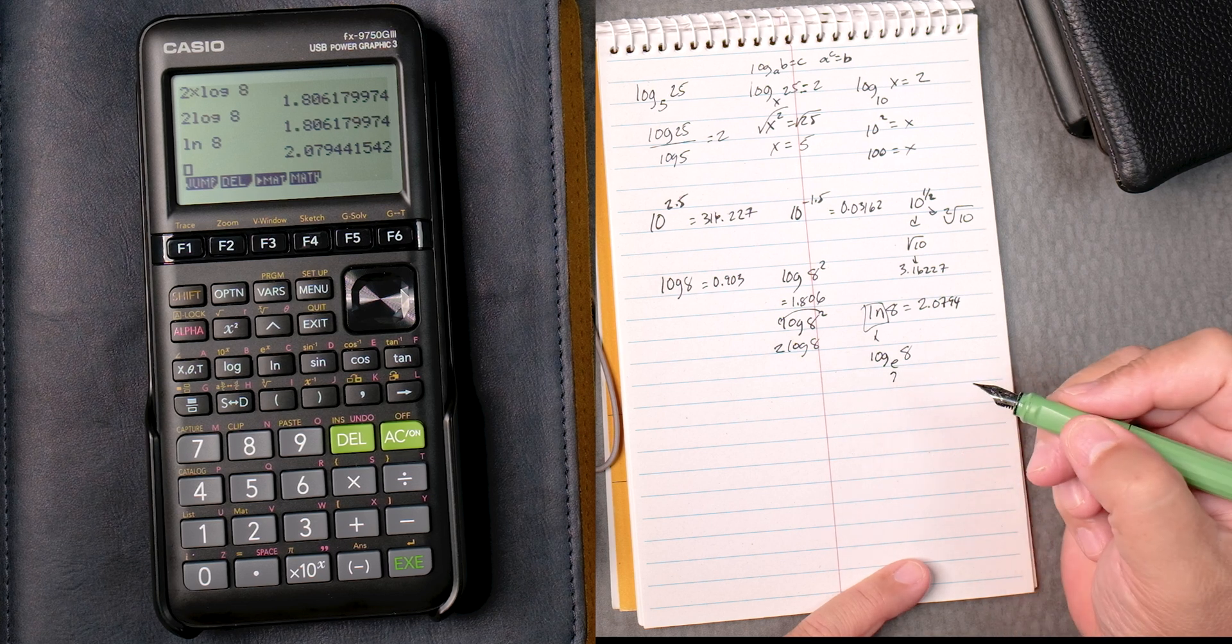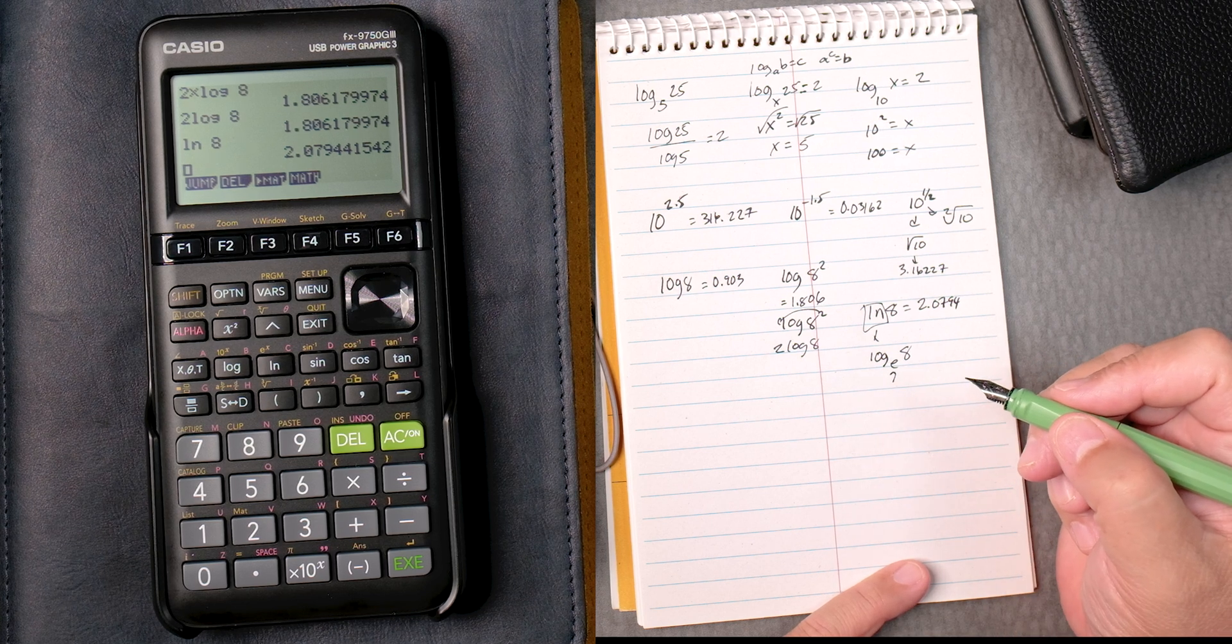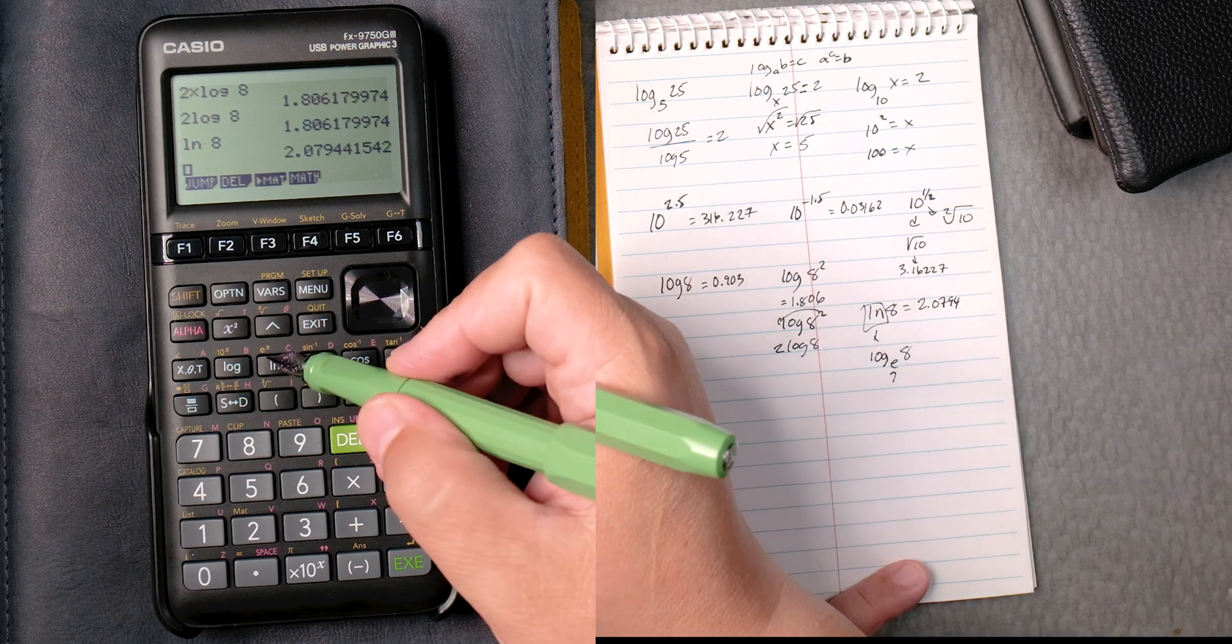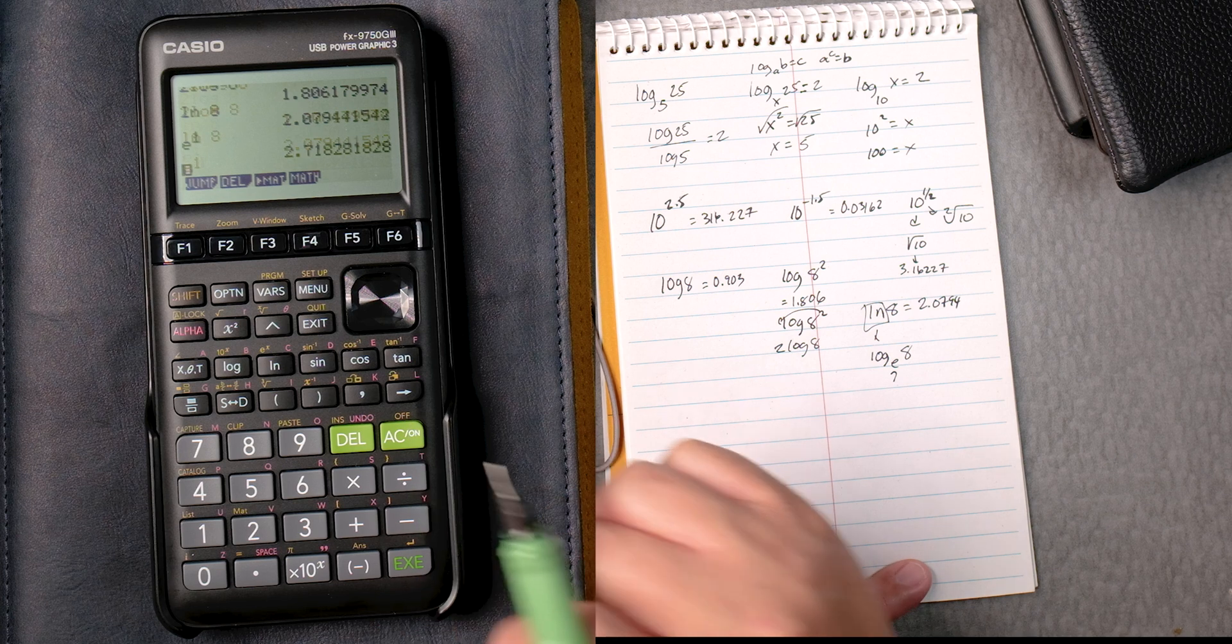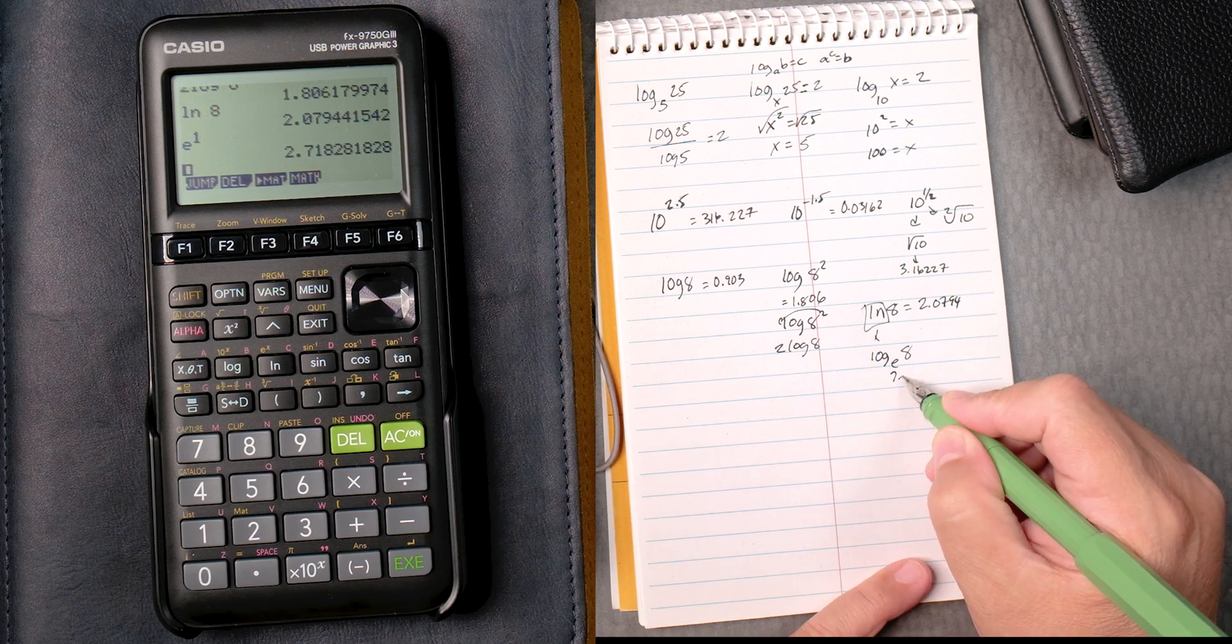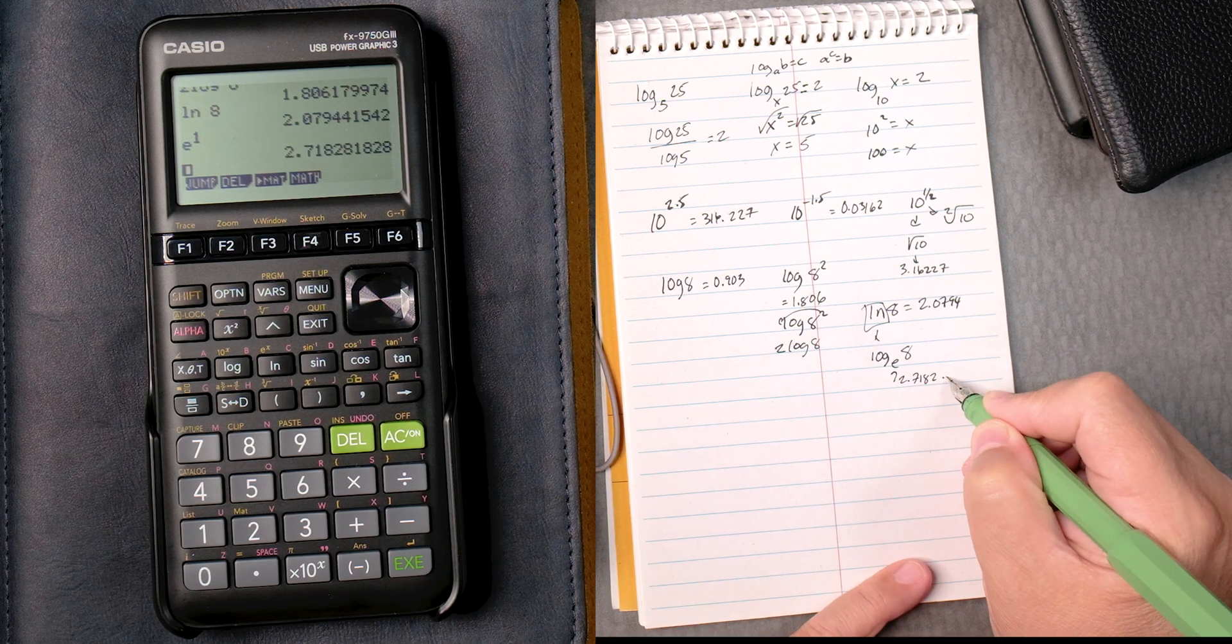What is e? Well, e to the x is right here in yellow. So e to the x, you put in a 1, and you can see e is 2.7182, and it keeps on going.